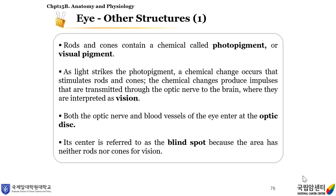Rods and cones contain a chemical called photopigment or visual pigment. As light strikes the photopigment, a chemical change occurs that stimulates rods and cones. The chemical changes produce impulses that are transmitted through the optic nerve to the brain, where they are interpreted as vision. Both the optic nerve and blood vessels of the eye enter at the optic disc. Its center is referred to as the blind spot because the area has neither rods nor cones for vision.